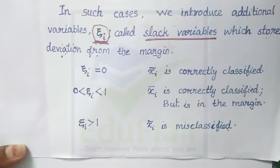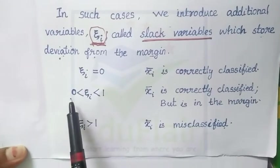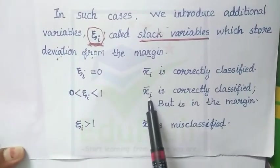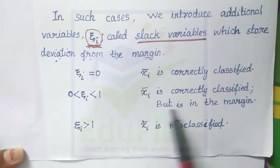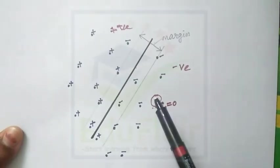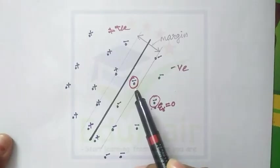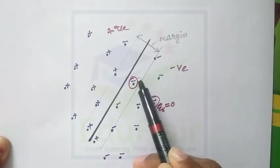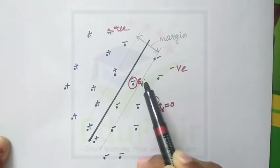The second case is when the value of ψᵢ is between 0 and 1 — that is, if ψᵢ is less than 1. This means the data point xᵢ is correctly classified but lies in the margin. This is the case where a negative sample is correctly classified but appears within the margin, so for this data point ψᵢ is less than 1.